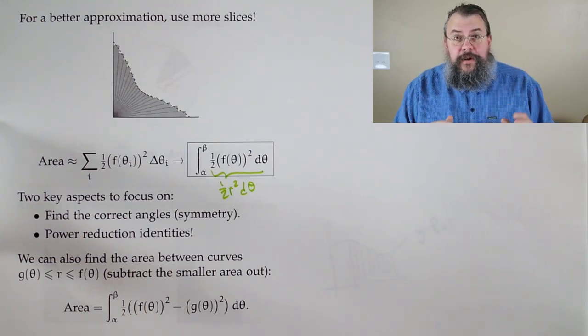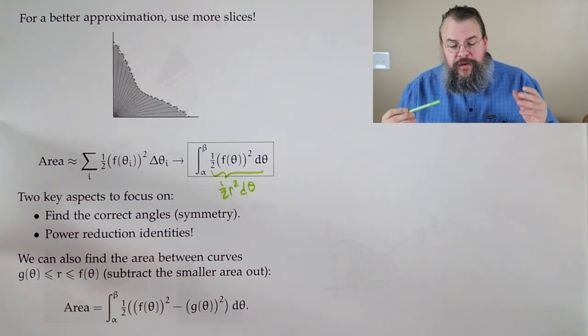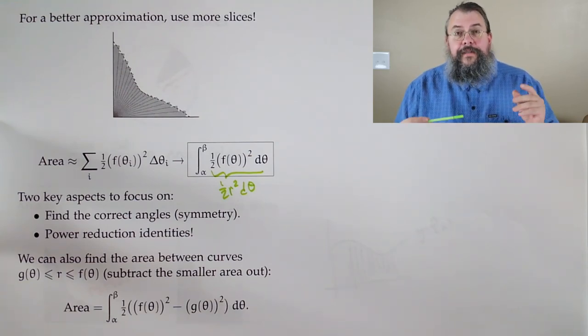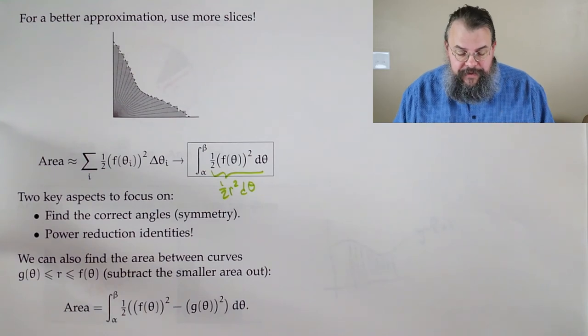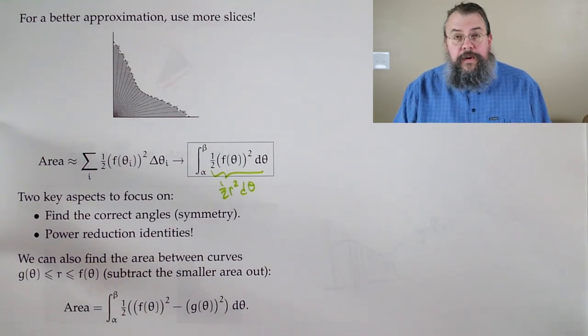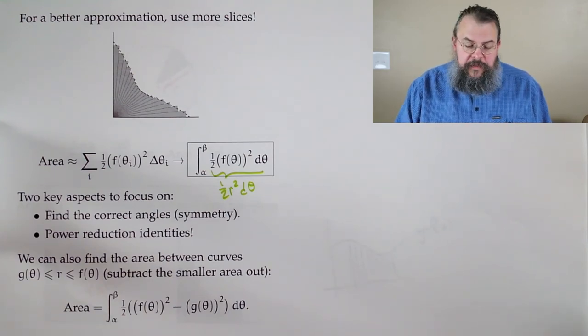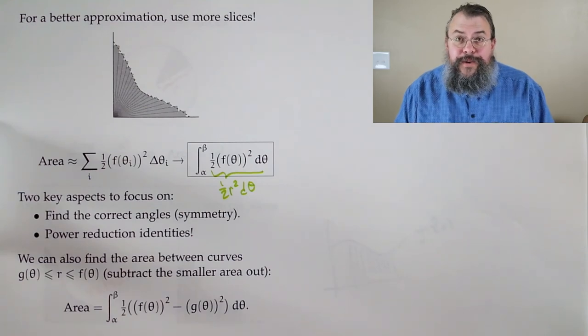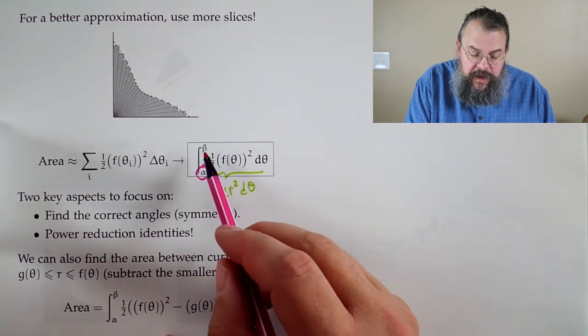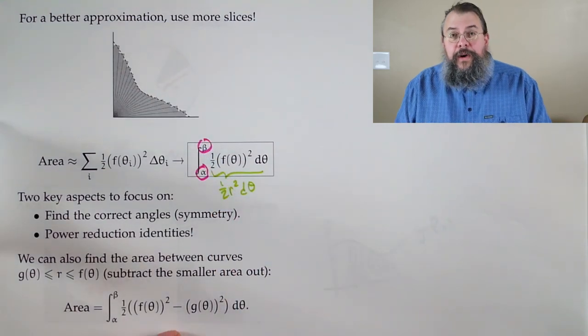Now, what do we need to look for? Well, we need to focus on a couple of things. First off, finding the correct angles. And that is, where do we start and stop? So, oftentimes, we aren't told where to start and stop. We have to figure it out. So, we have to figure out where alpha and beta are.